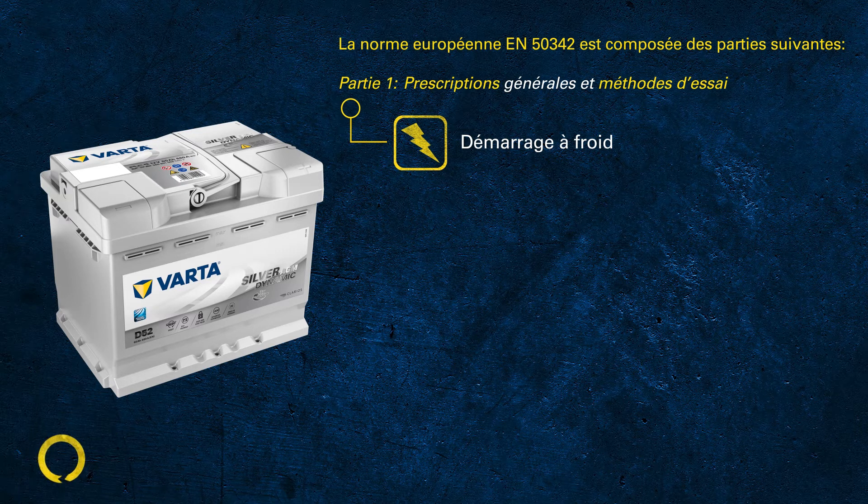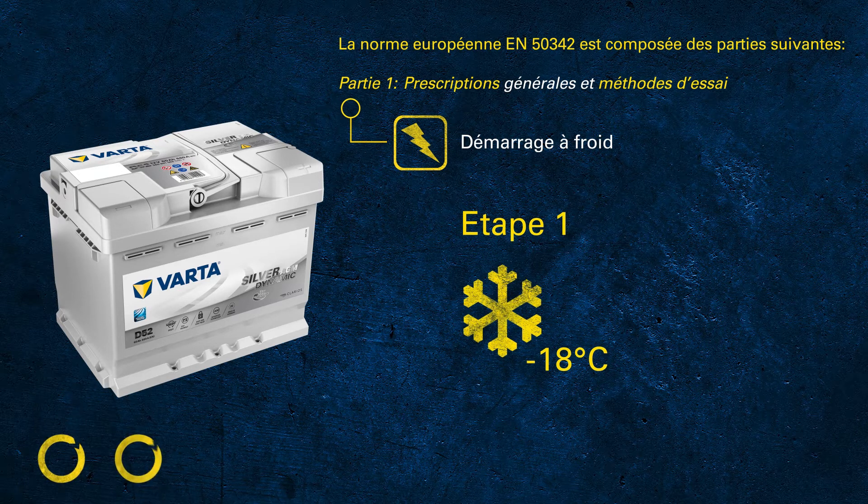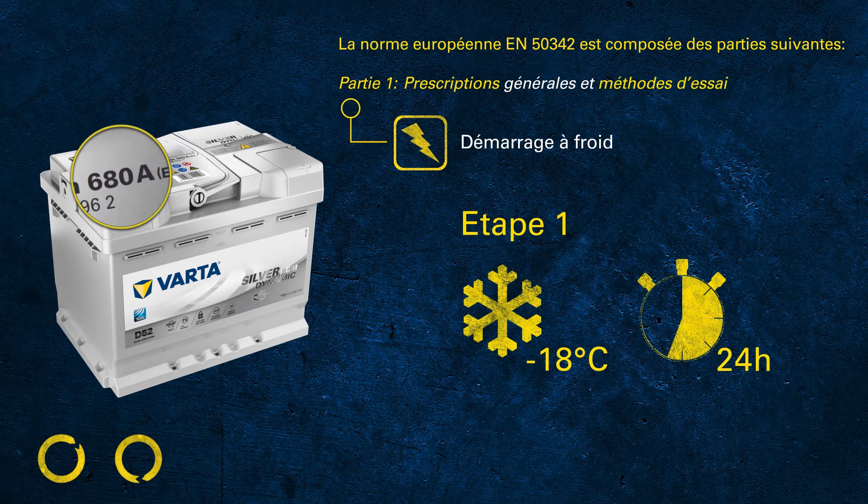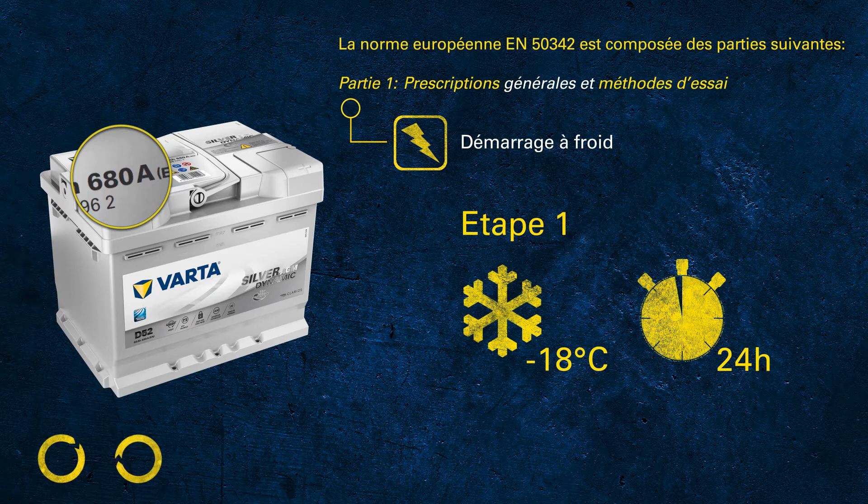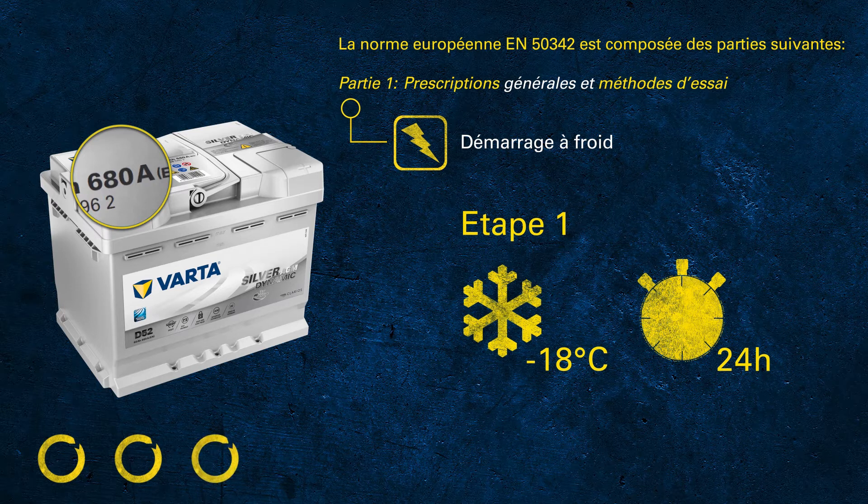The EN CCA test is made of three steps. In step one, the battery is cooled down to minus 18 degrees for at least 24 hours. This is what we commit to when printing 680 amps on the label. We ensure this battery can deliver 680 amps at minus 18 degrees Celsius.